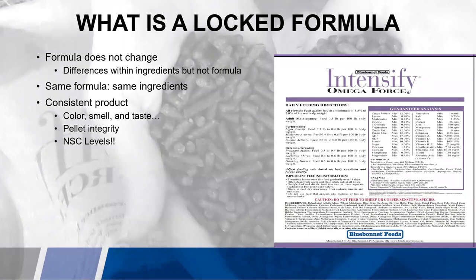We alluded to NSC levels earlier. With a locked formula, you can put on the label the NSC content. Using this feed tag on the right, the starch is 10% and the sugar is 5%, so the total NSC is 15%. If you are someone who wants to be at a certain percent of starch and sugar, you can use a locked formula as a tool to be more mindful of how much starch and sugar is in your feed, and then focus on your forage and the starch and sugar relative to it.